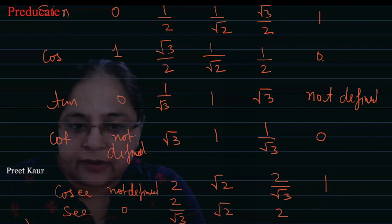And this is 2. And this is not defined. Why? 1 upon 0. Because cos 90 is 0, so 1 upon sec, 1 upon 0 is not defined.